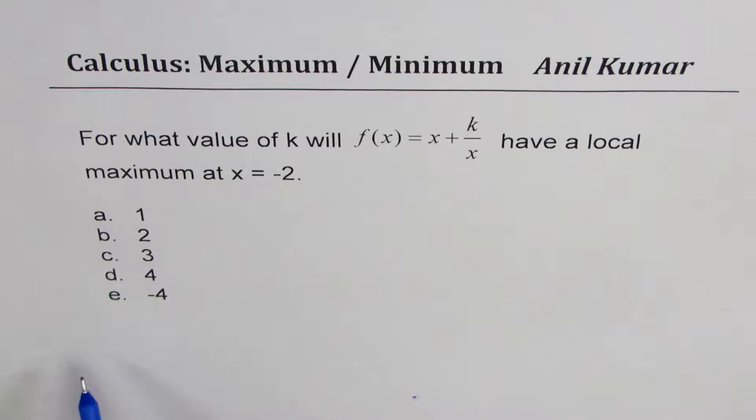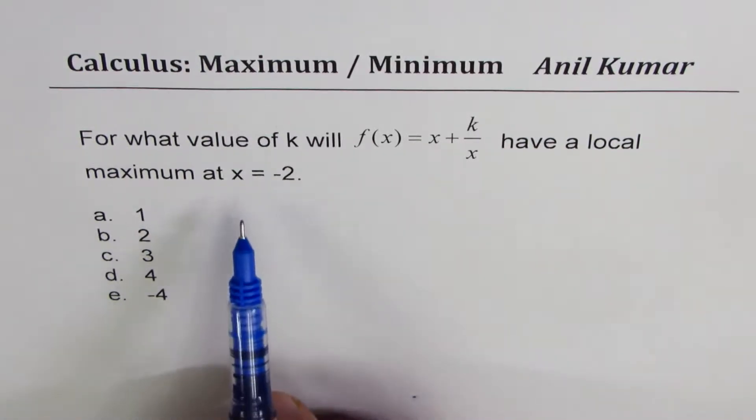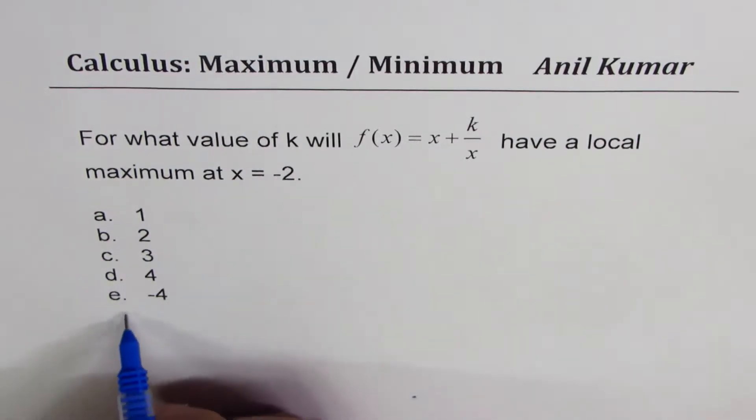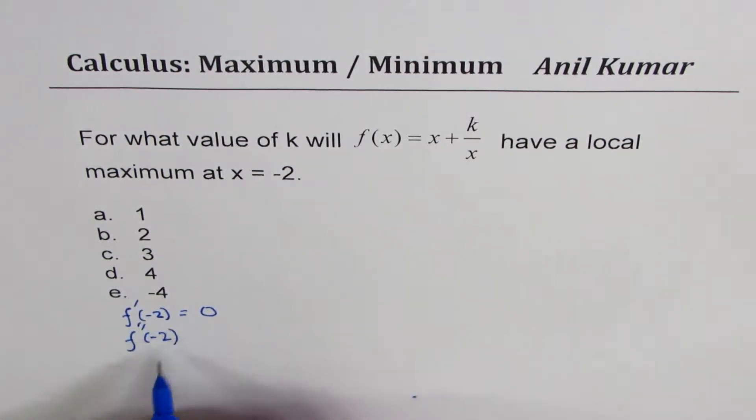Now let us first discuss the strategy. If we want local maximum at x = -2, we are looking for the first derivative at -2 equal to 0 and the second derivative at -2 to be less than 0. We want it to be negative. That means it will be concave down and that gives you a maximum.